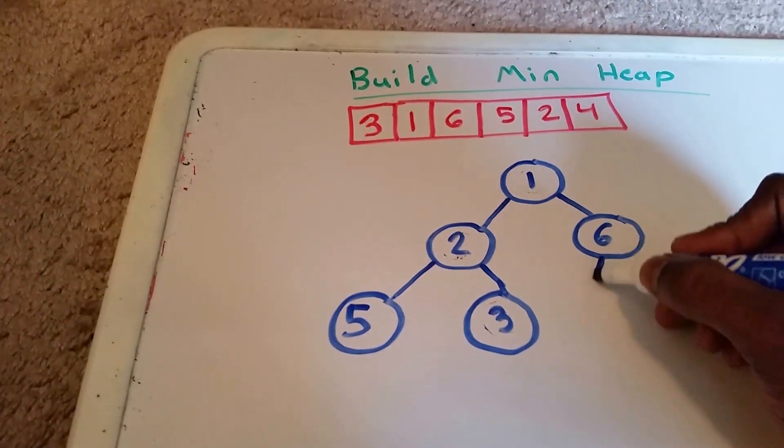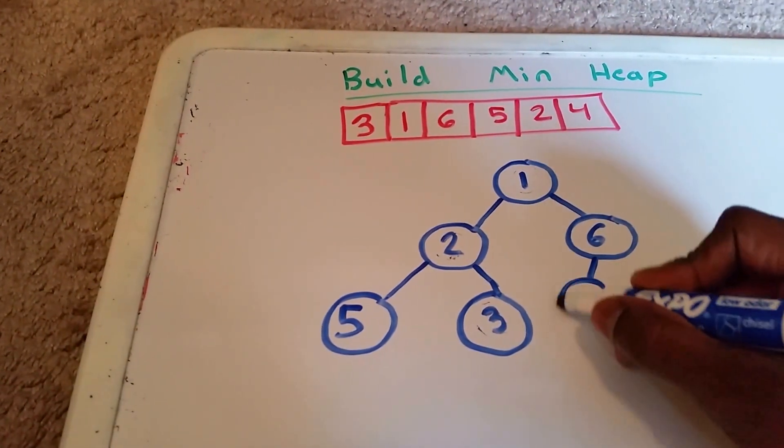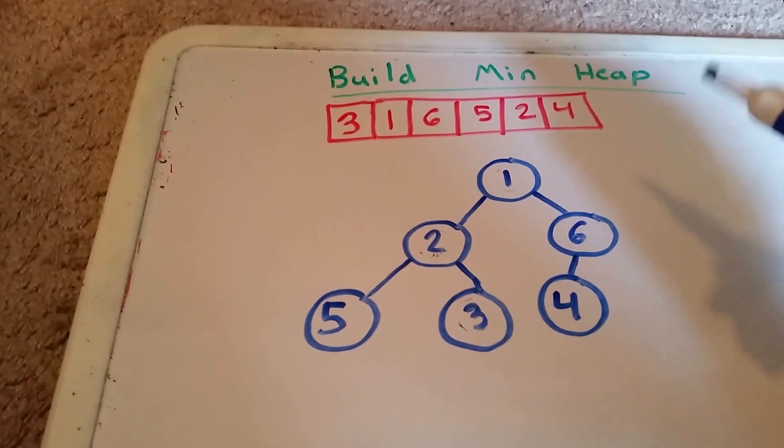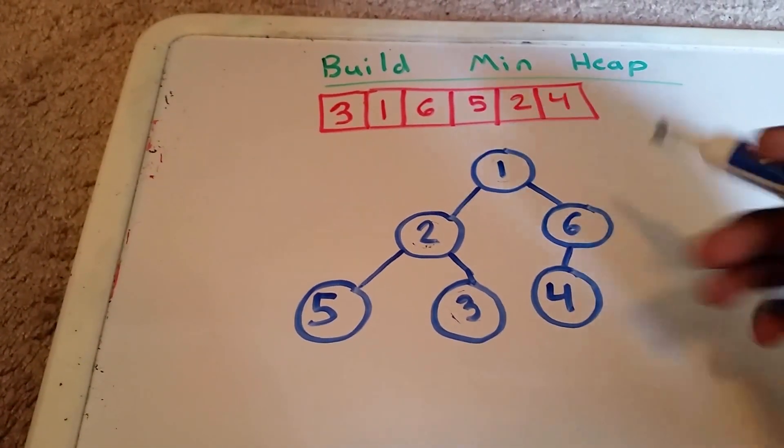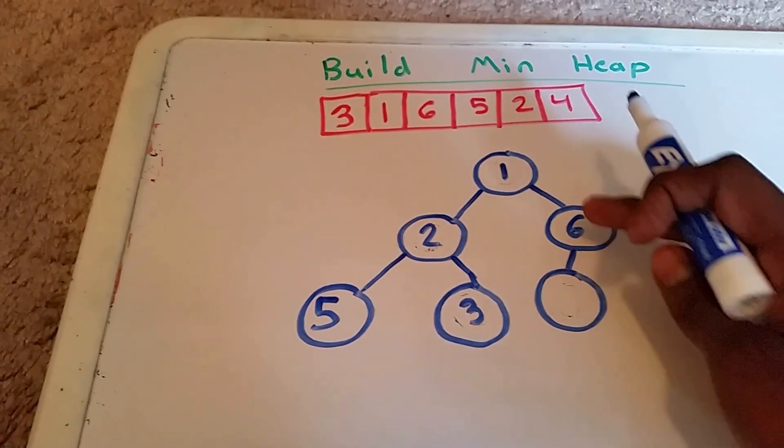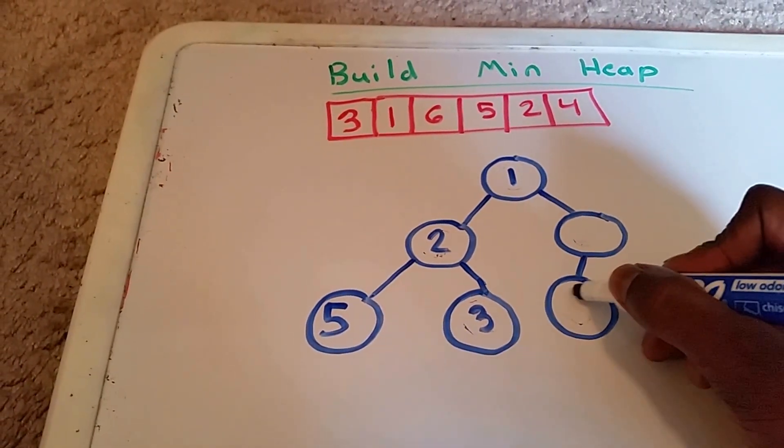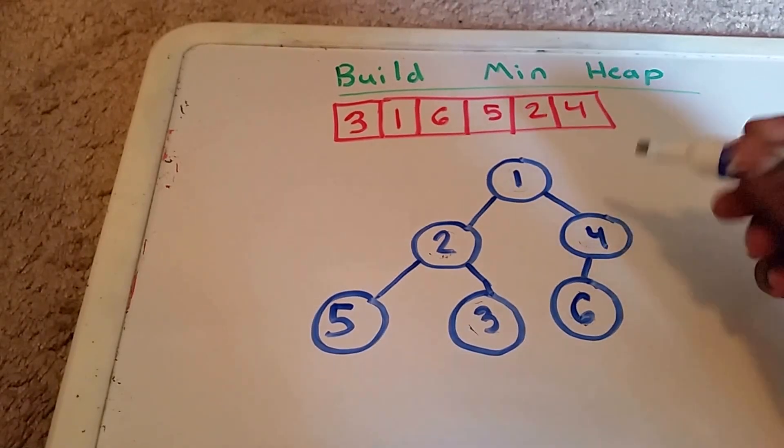We go to our 4 and we add our 4 here, and now we have another issue. 4 is less than 6, so we must swap the 4 and the 6—6 here, 4 here. And then check that the 4 is greater than or equal to its parent, which is 1, and it is.